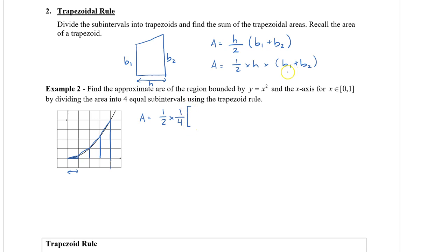Base 1 will be our left side and base 2 will be our right side of each trapezoid. For the first trapezoid, base 1 is 0, so we have 0 squared. The reason we square it is because our function is y equals x squared — to find y we square our x value. The right side of our first trapezoid is one-quarter, so we add plus (one-quarter) squared.